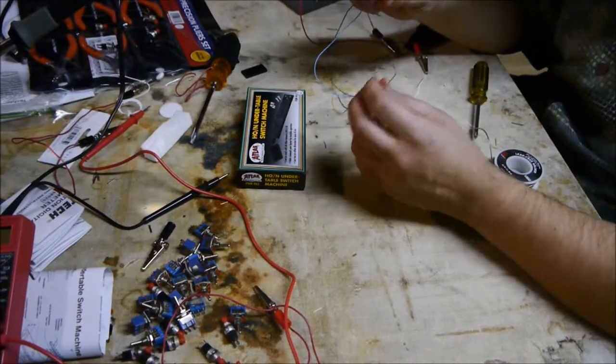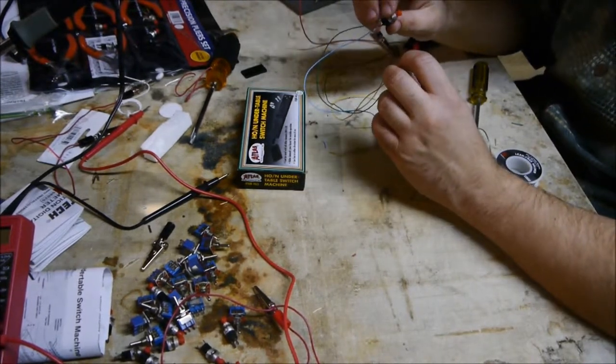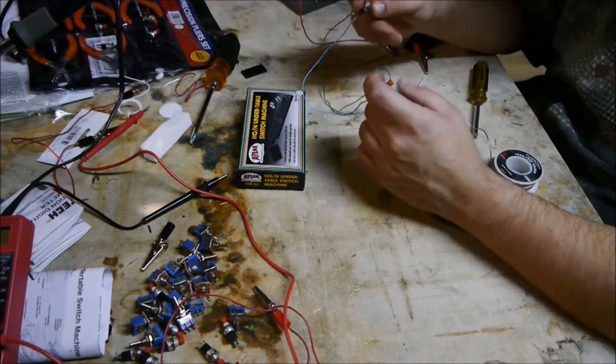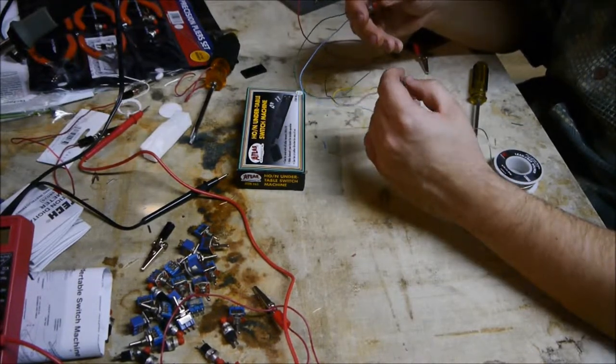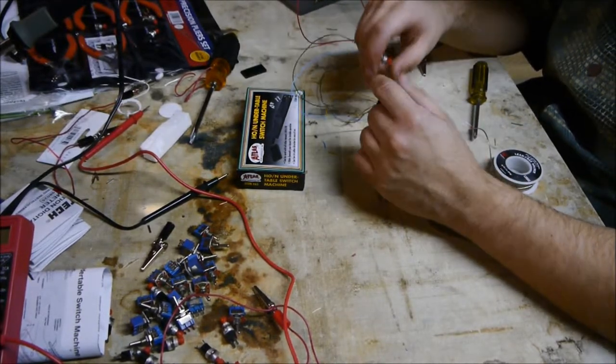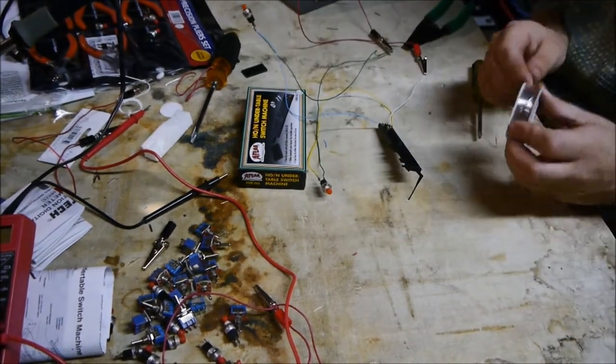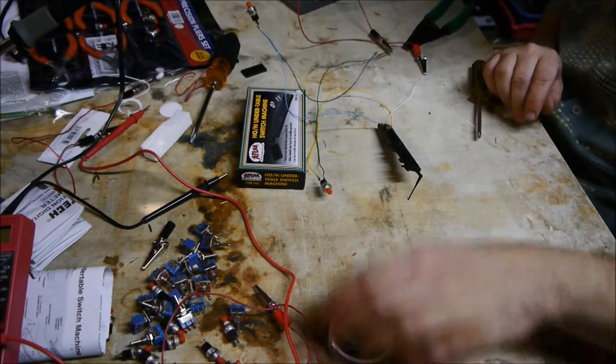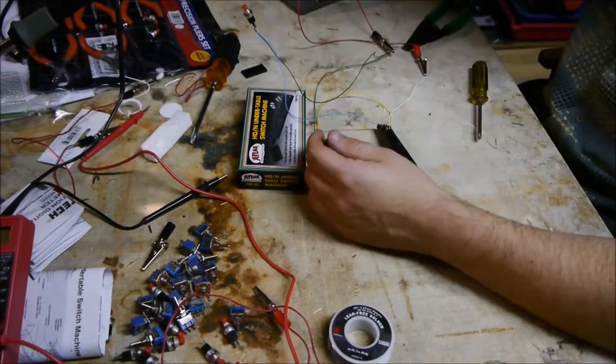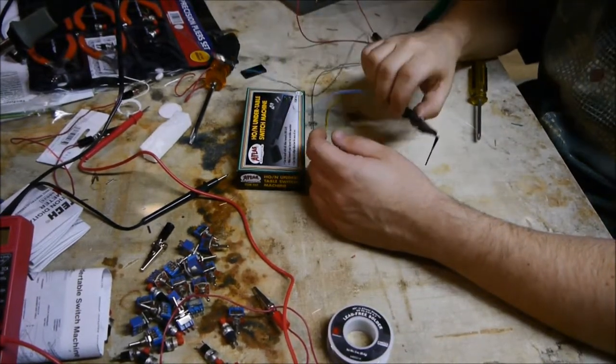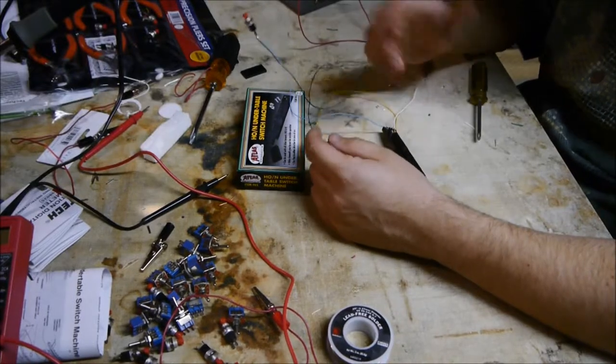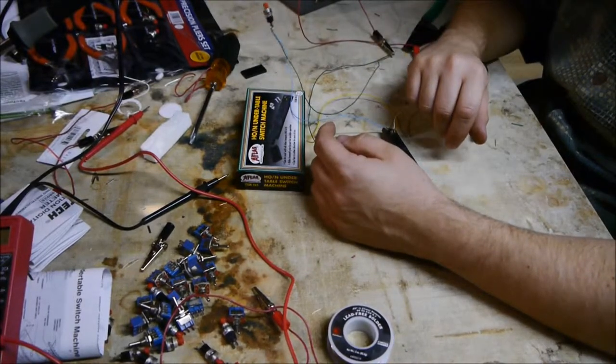And you'll see how I put these on my control panel a little later, but I have two of these wired up now, ready to go. And you'll see more of this a little later on, but that's how I wire one of these solenoid switch machines. And I actually know that the tortoise switch machines work a little bit differently. Some of the other machines work a little differently.